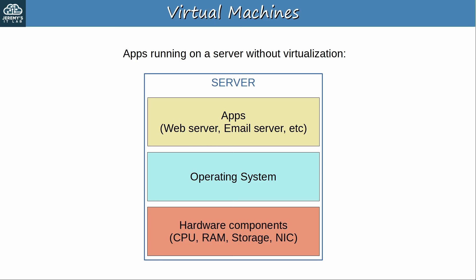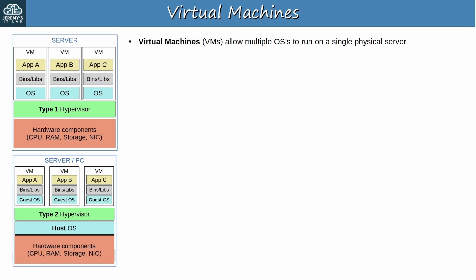Virtual machines are a solution to this problem. VMs allow multiple operating systems to run on a single physical server, and then apps are installed on those operating systems. A hypervisor is used to manage and allocate hardware resources to each VM. The VMs are all running on top of the same physical hardware, so they need a hypervisor to allocate those resources appropriately.